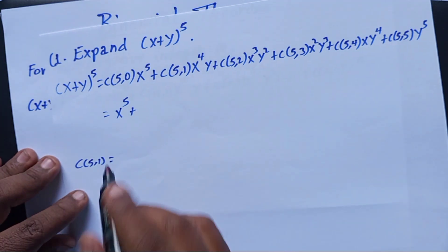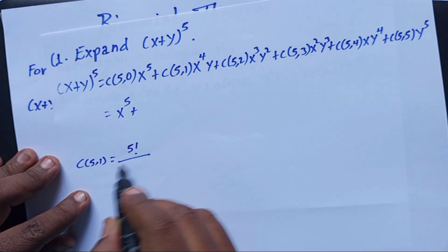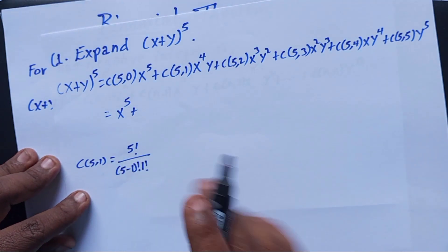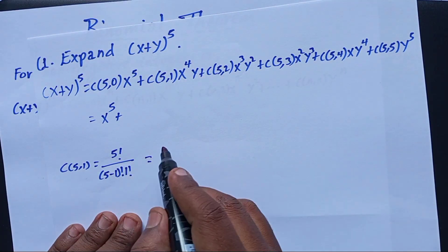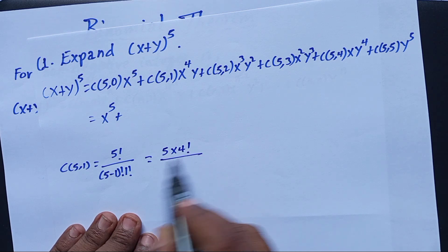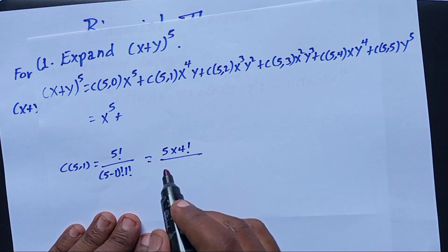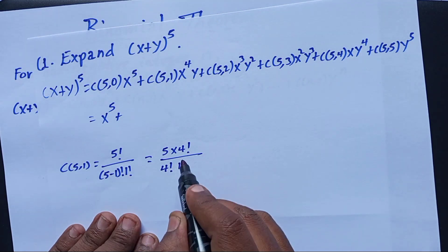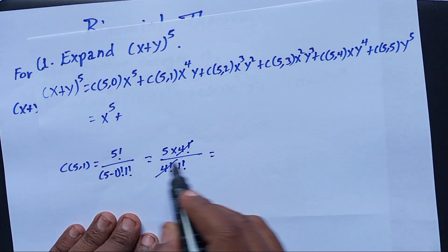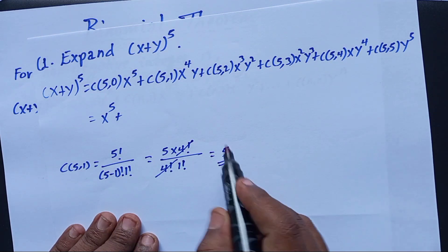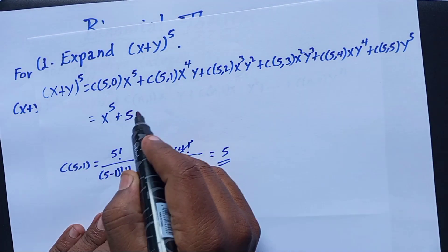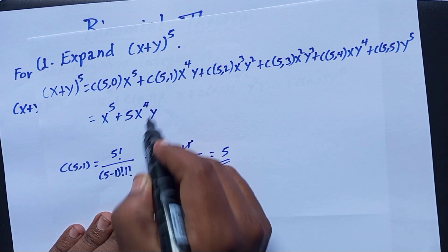C(5,1) equals 5! over (5-1)! times 1!, which is 5 times 4! over 4! times 1. The 4! cancels, so we get 5. This 5 is the coefficient for x^4 y, so we have 5x^4 y.